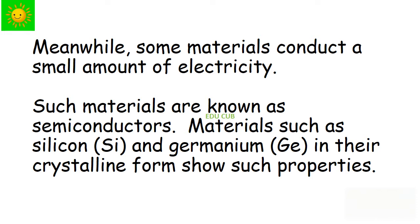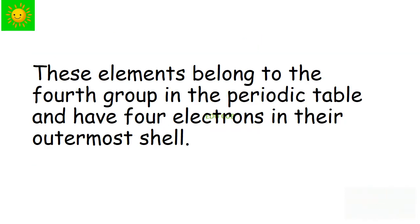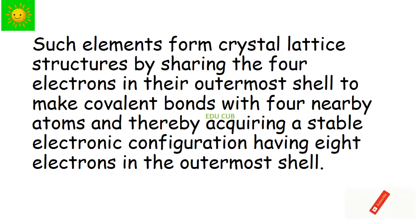Materials such as silicon and germanium in their crystalline form show such properties. These elements belong to the fourth group in the periodic table and have four electrons in their outermost shell. Such elements form crystal lattice structures by sharing the four electrons in their outermost shell to make covalent bonds with four nearby atoms.